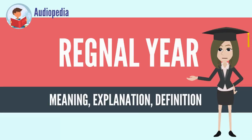The regnal year is a year of the reign of a sovereign, from the Latin 'regnum' meaning kingdom or rule. The oldest dating systems were in regnal years and considered the date as an ordinal, not a cardinal number.